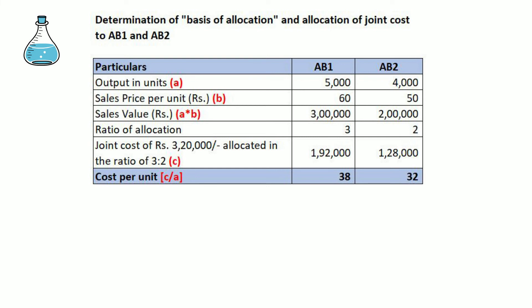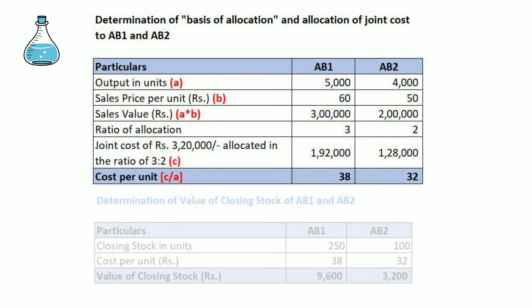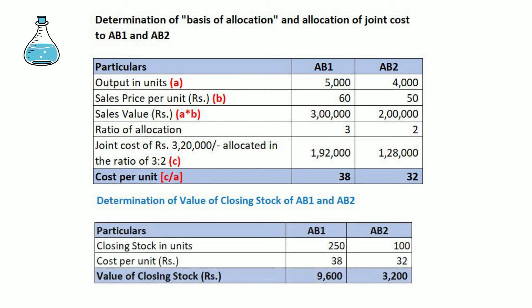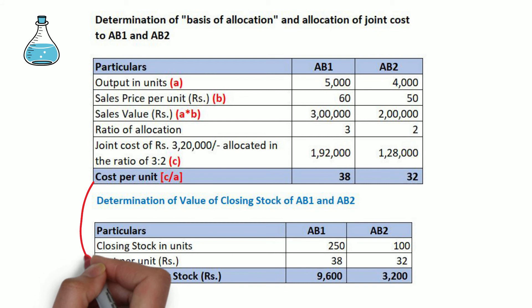The basis of allocation is sales value, and the joint cost is allocated accordingly. After this, we can value the closing stock — the closing stock in units is multiplied by the allocated cost per unit, giving us the value of closing stock.